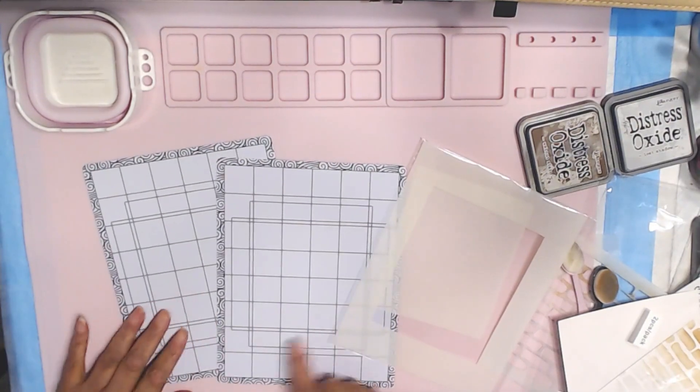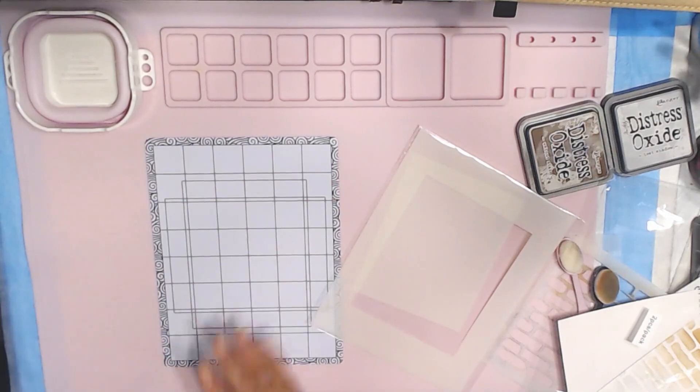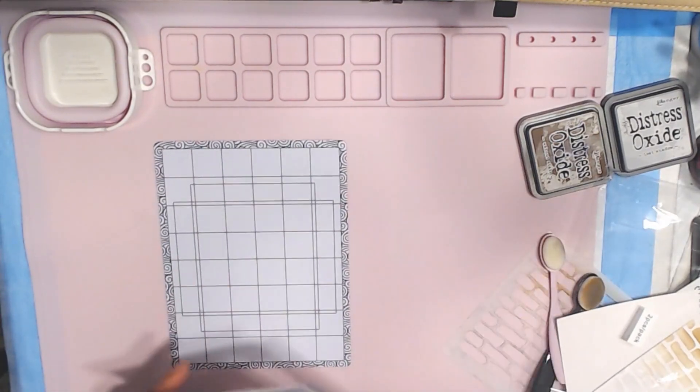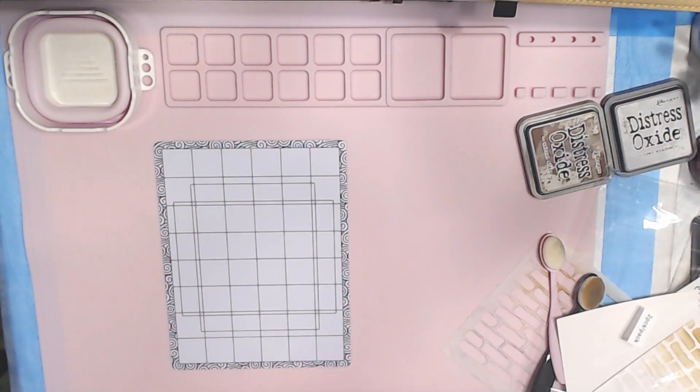So now you have your mat, your stick and stamp mat, for stamping as well as stenciling, and we're going to use it right now for stenciling. But this comes with a template.